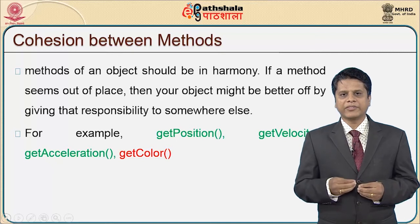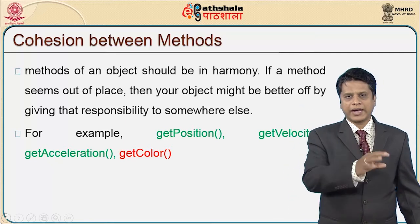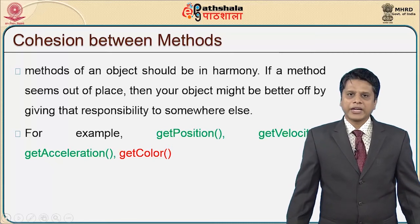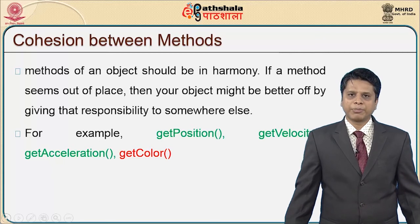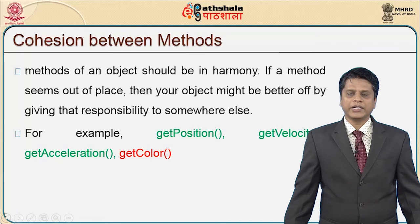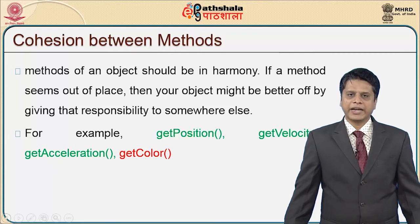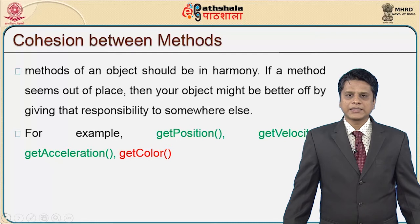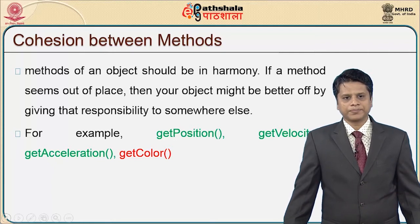For each activity — say fetching a particular student's detail from a database — you would not enter the student's name, department, and address to fetch a single student detail. Rather, you enter the roll number, which retrieves all details: name, address, and degree. This system has high cohesion and low coupling. We must design systems so that cohesive activity is high rather than coupling activity. When looking at cohesion between methods, methods of an object should be in harmony.